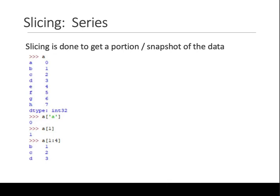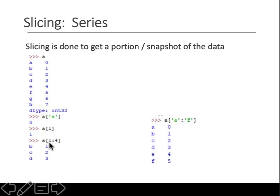There is an important difference: when you use numeric indices it is first-to-include, first-to-exclude. But when you use the index names (labels), both endpoints are included. So a['a':'f'] starts at 'a' and stops at 'f' — both included. That's a slight difference to keep in mind.